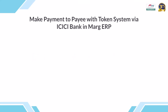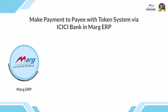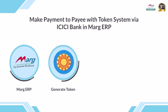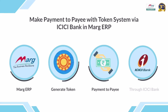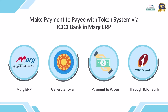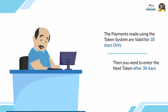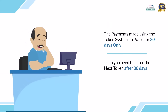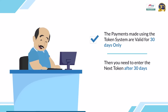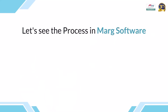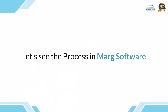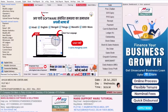Hello everyone. In this video you will learn how you can make payments to your payee through the ICICI bank using the token system in Marg ERP. When you make a payment with a token number, it will be valid for 30 days, and then you will enter the next token after 30 days.